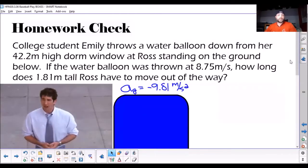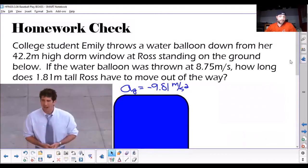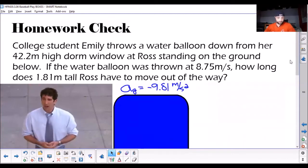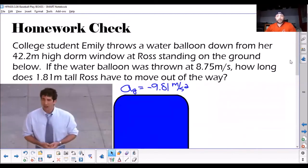So, the first thing we do is start with a review, a little homework check to see how much you remember, and brownie points if you get the reference. So, we got Emily throwing a water balloon down, and the balloon is thrown with 8.75 meters per second. How long does Ross have to move out of the way?